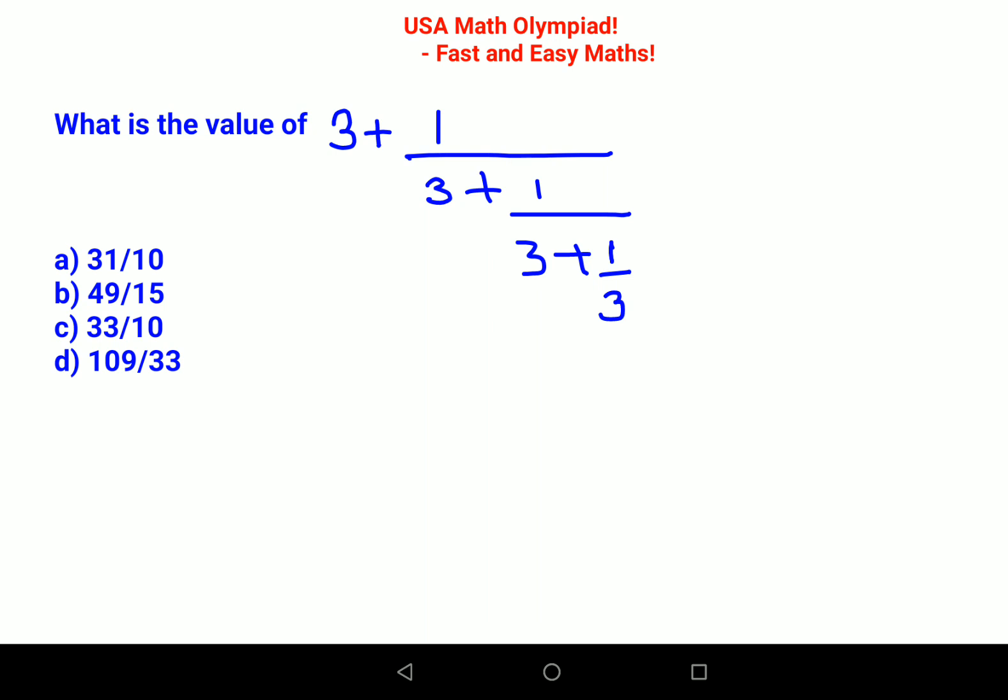Basically, you write this fraction first. We'll write one and then we'll write three, and then we'll count the number of pluses we are having. There are one, two, and three. The next job is you will put a multiplication of three...